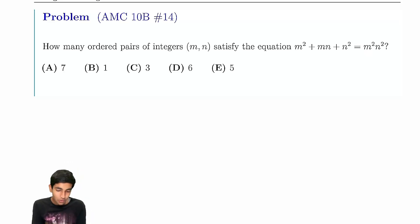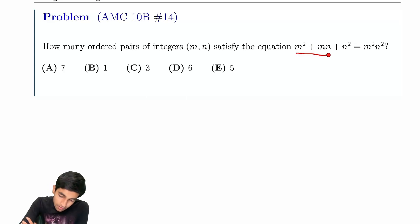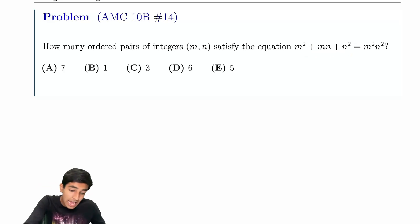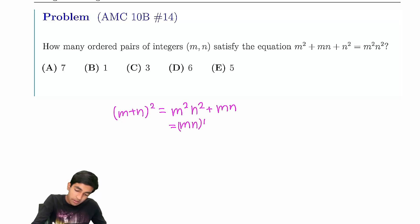This actually has a really neat trick. There are many ways to solve this problem, but I'll show you the way I personally came up with. The key thing is this is really close to a perfect square. If we just add mn, we get a factorization: mn(m+n)² on one side, and m²n² + mn, which is mn(mn+1).